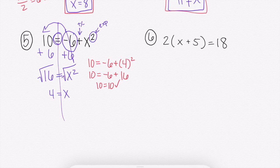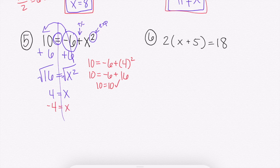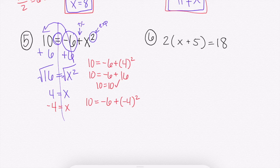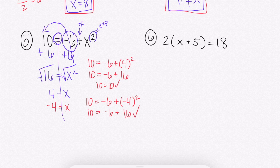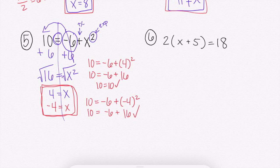However, 4 is not the only number that multiplied by itself gives 16. A negative times a negative also gives a positive. So negative 4 is also an answer: negative 4 times negative 4 equals positive 16, plus negative 6, again gives 10. So when you end with x squared equals something, you actually have two answers because positive 4 squared and negative 4 squared give the same result.